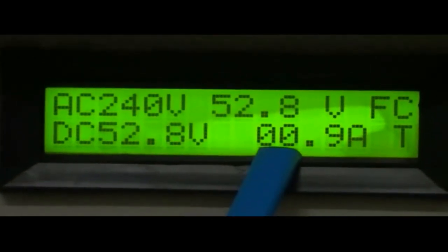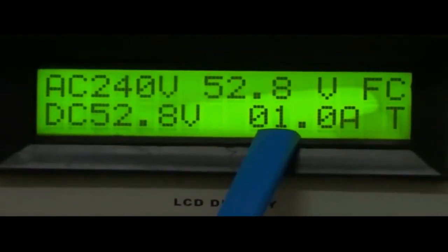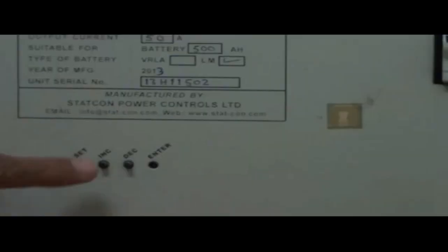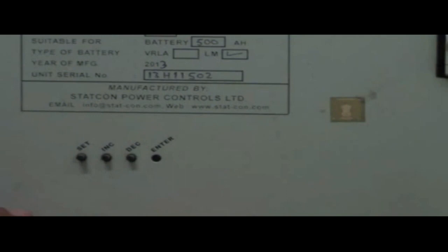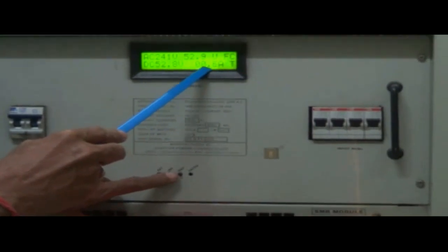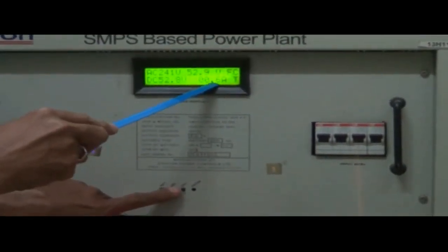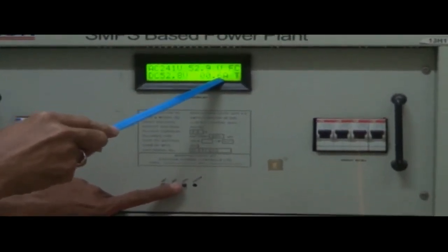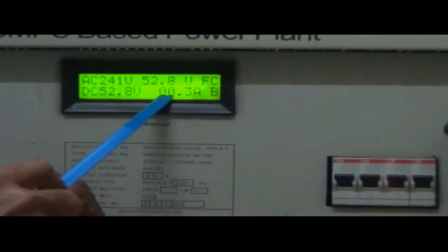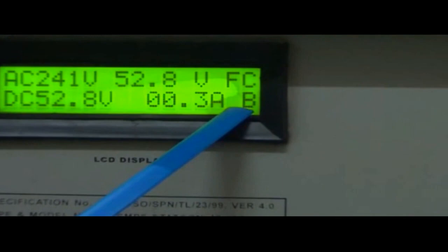Right corner of the display at second line shows load current with symbol T. Right corner of the display at second line also shows battery current. To see the battery current, press increase for three seconds. The system will display battery current with symbol B within 10 seconds.